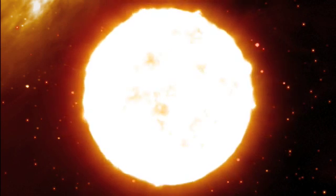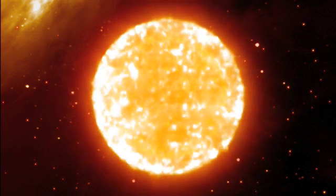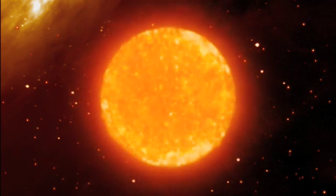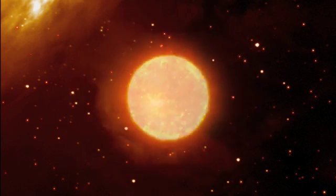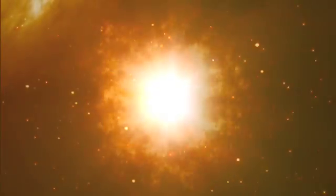Stellar-mass black holes are formed when stars 20 or more times the size of our own Sun finally run out of fuel in their cores. They rapidly cool and collapse, and the shockwave from the collapse blows the outer layers of the stars to bits in a colossal explosion called a supernova.